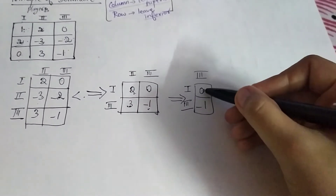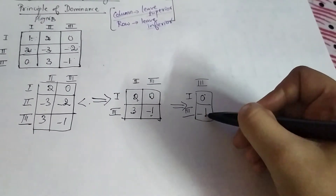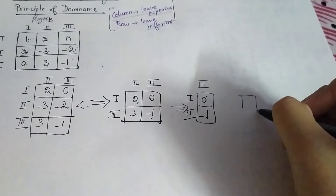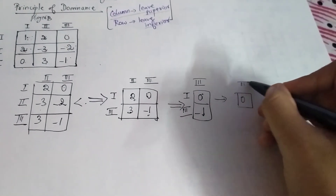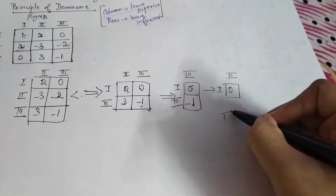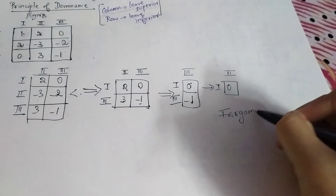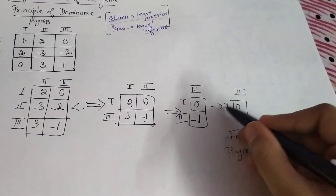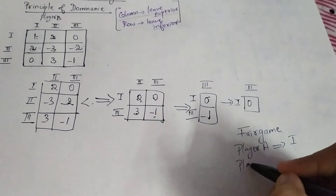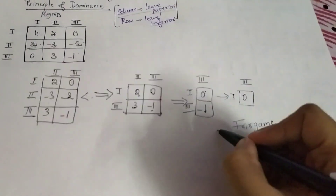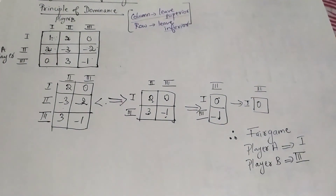Now you are left with only two values in a column: zero and minus one. In row-wise comparison, leave out the inferior one — minus one is inferior, so you leave that out. You are left with zero, which corresponds to the third column and first row. The value of the game is zero — it is a fair game. Player A's strategy is one, since player A is on the left side, and player B's strategy is three. This is the conclusion after solving using the principle of dominance.